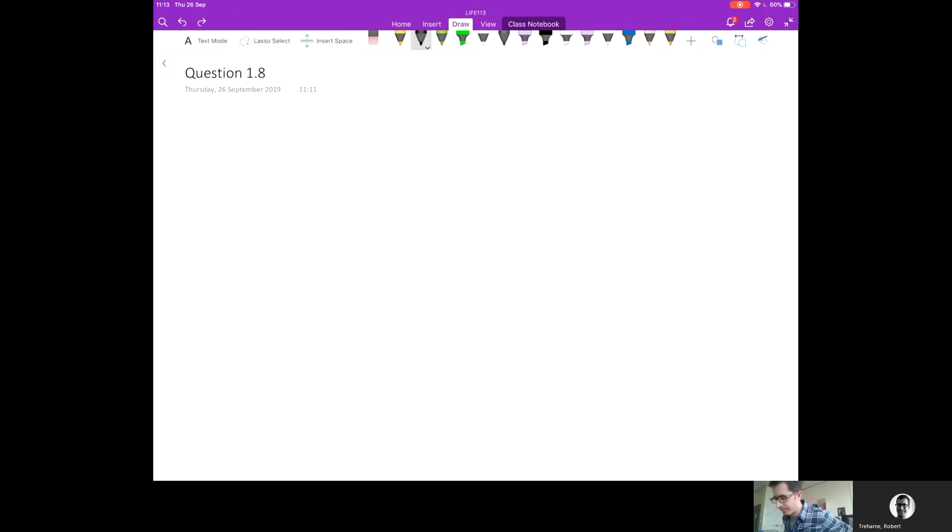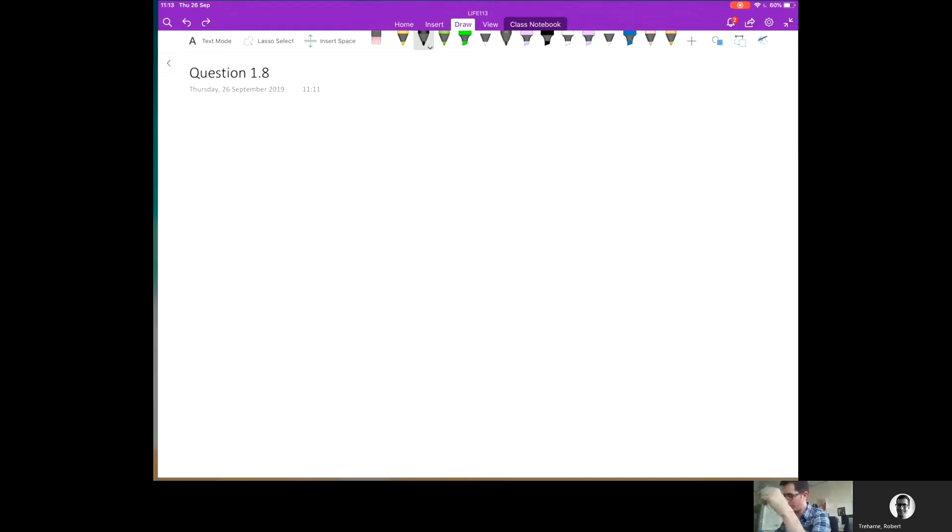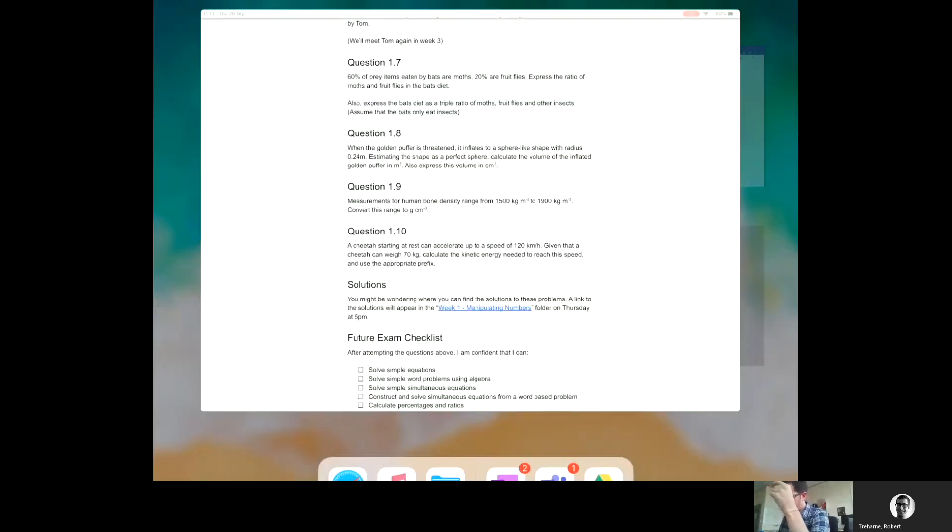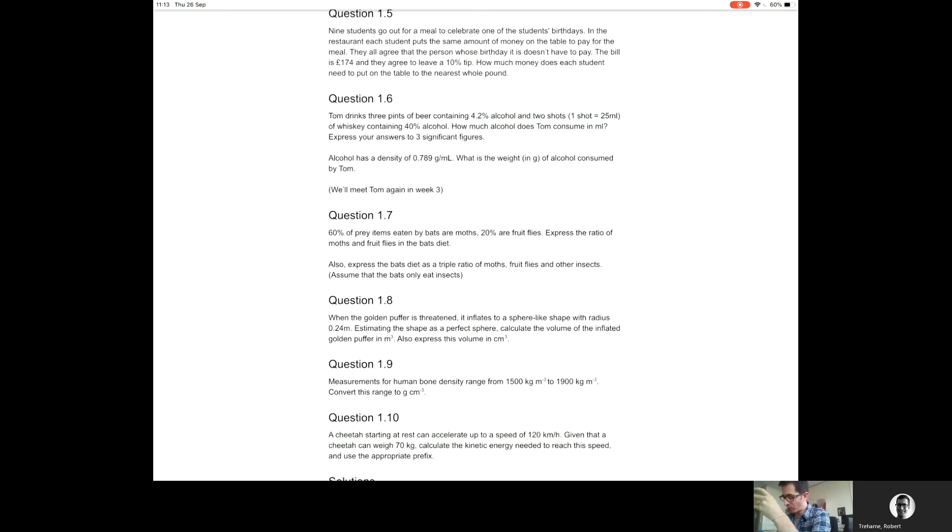Okay, back with question 1.8. Let me read it out. When the golden puffer is threatened, it inflates to a sphere-like shape with a radius of 0.24 meters. Estimating the shape as a perfect sphere, calculate the volume of the inflated golden puffer in meters cubed and then again in centimeters cubed.